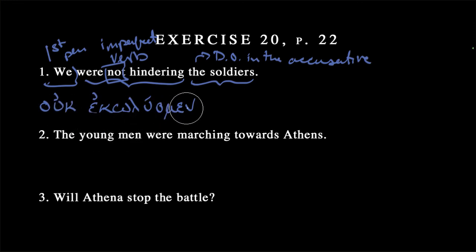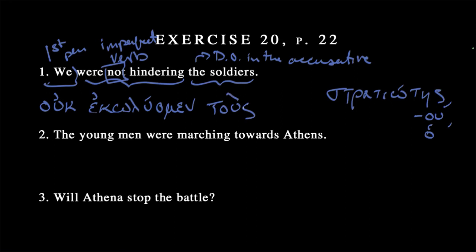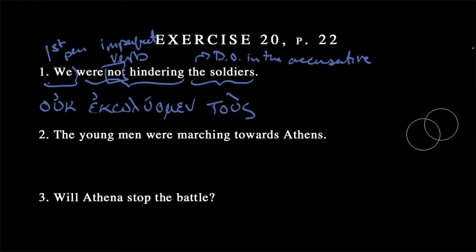"We were not hindering" — perfect. Now we can get to "the soldiers." The word for soldier is stratiōtēs. We have a number of forms. With that accent on the omega — stratiōtēs, and then stratiōtu — and it's masculine, so we have nominative, genitive, masculine: that's our word. We need to make it masculine, so the article right now is going to be masculine, accusative, plural: tous.